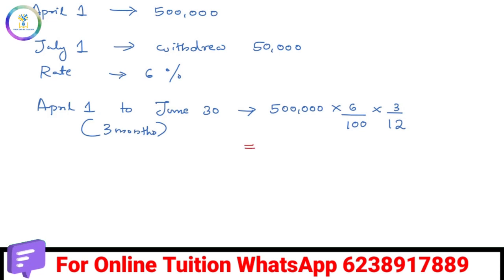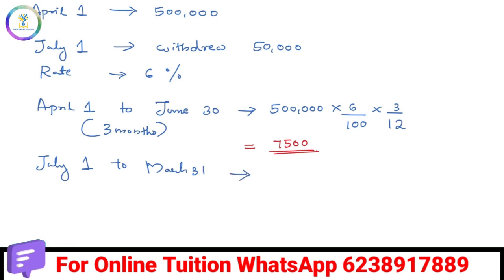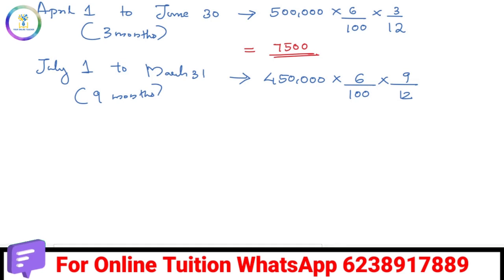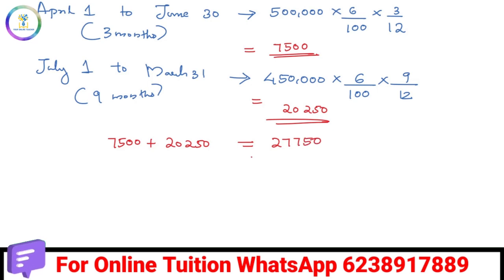That gives Rs. 7,500. Then for July to March that is 9 months, the calculation is 9/12, giving Rs. 20,250. So Rs. 20,250 plus Rs. 7,500 means the total interest on capital is Rs. 27,750. This is how we calculate the interest on capital.